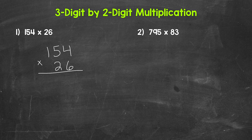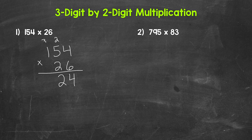Then we take those results and add them for our final answer. We'll start with six times four — that gives us 24. So we write our four and carry the two. Then we do six times five, that gives us 30, plus that two is 32. Carry the three. Then we have six times one, that gives us six, plus that three is nine. So 154 times six is 924.